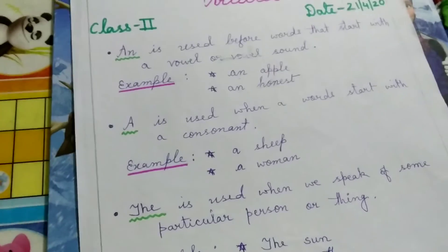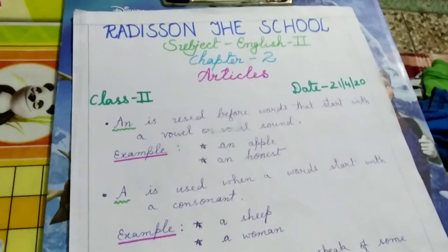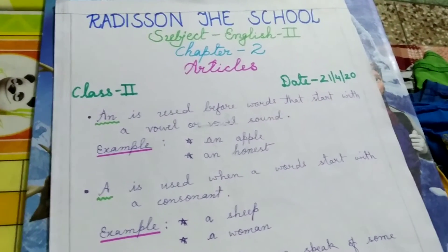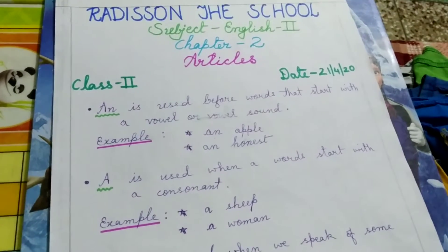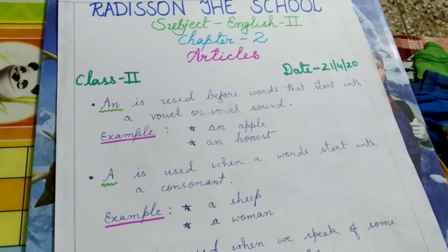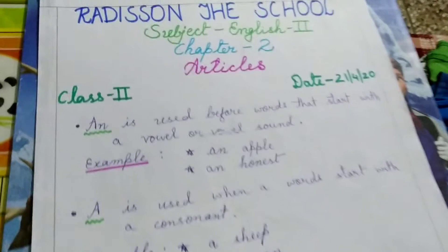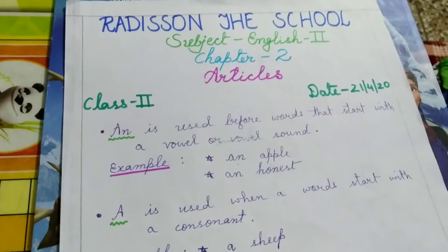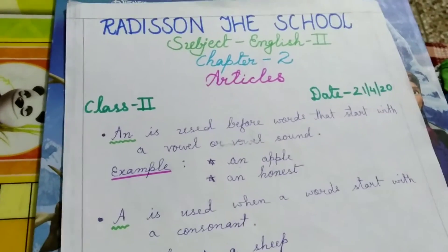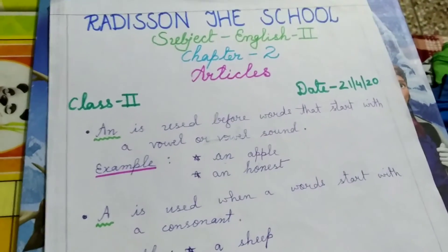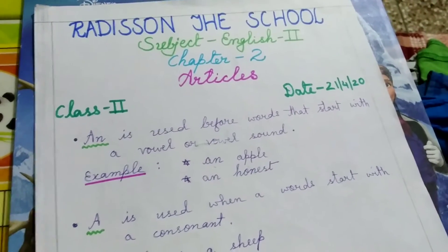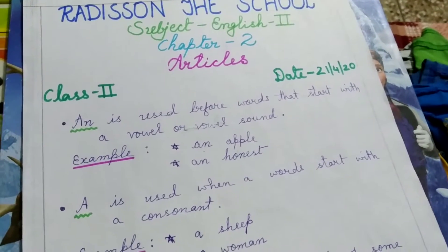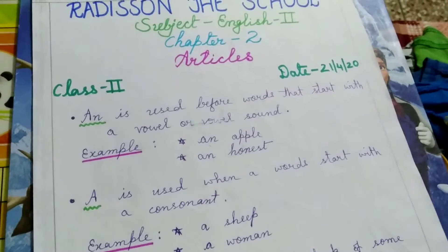Yeh kahaan use hotay hain? In a sentence, jo bhi noun hota hai, noun se pehle yeh A, AN, or The ka use hota hai. Ab noun kya hota hai? What is noun? Noun is a name of a person, place, or thing. Kisii bhi person, kisii bhi place aur kisii bhi thing ke naam ke aage A, AN, or The use hota hai.